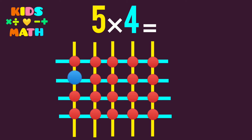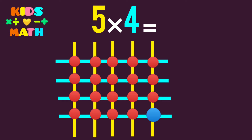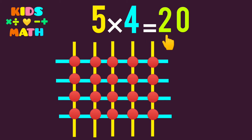We count: 1, 2, 3, 4, 5, 6, 7, 8, 9, 10, 11, 12, 13, 14, 15, 16, 17, 18, 19, and 20. So 5 times 4 equals 20.